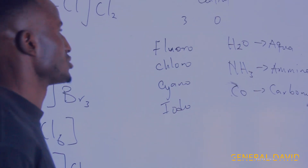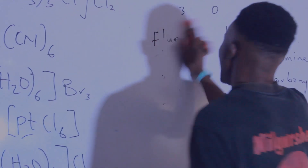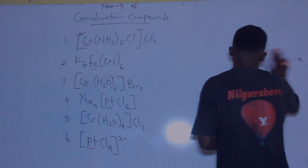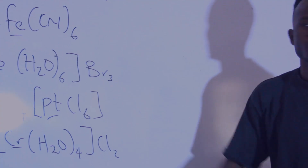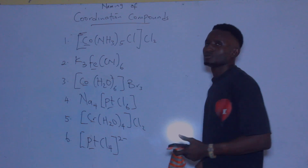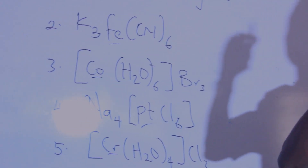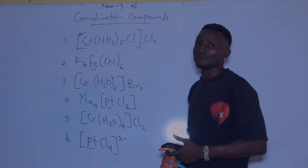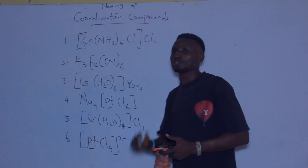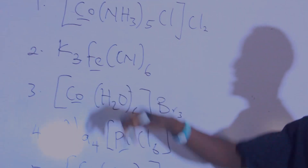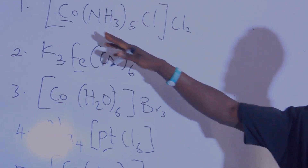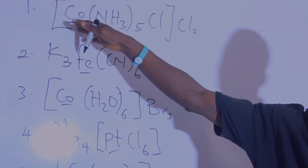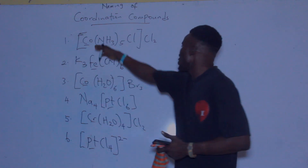So let us check the structures on the board and learn how to name them. For the first compound, we will first identify the oxidation state of the central atom of each compound. The central atom here is cobalt, so let us find the oxidation state of cobalt.